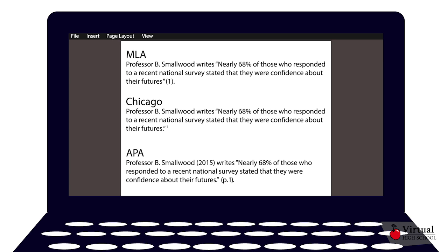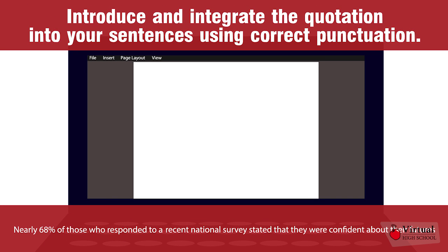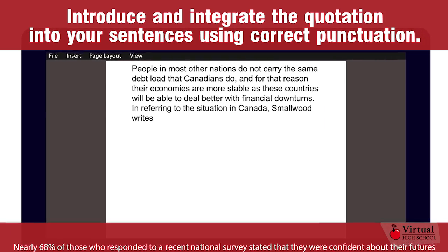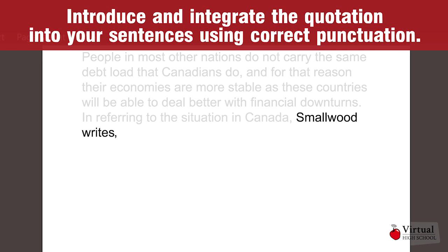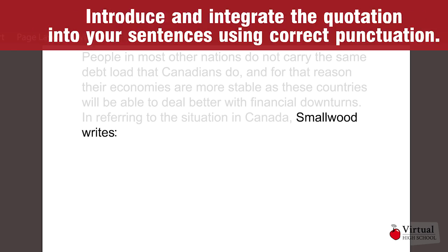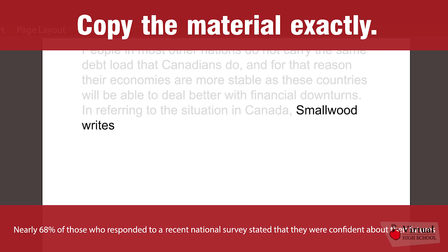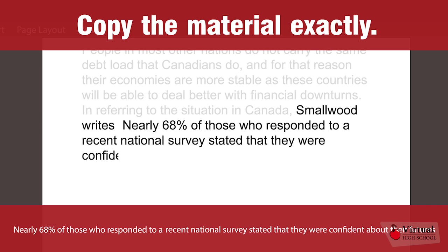No matter what citation style you use, these steps can help you properly format and cite quotations. Introduce and integrate the quotation into your sentences using correct punctuation. For example, you may use a comma or a colon to introduce your quotation. Copy the material exactly, focusing on the wording, spelling, punctuation, and capitalization in the original quotation.